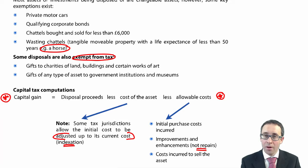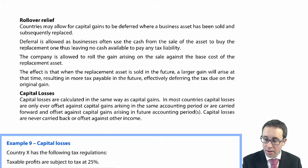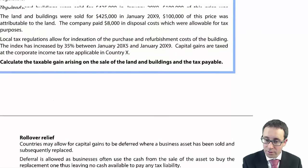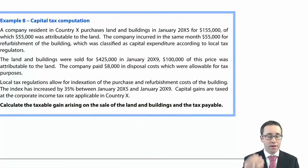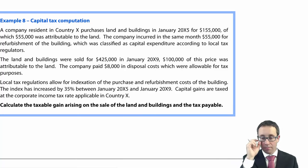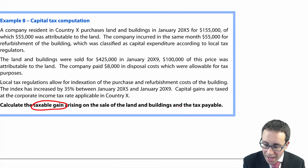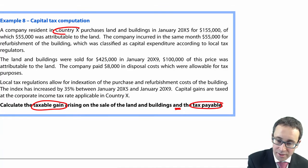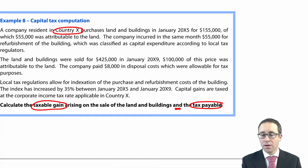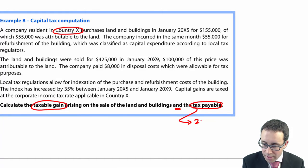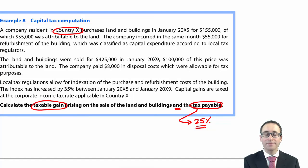You just need to learn those and apply them within the question. Looking at the question at the bottom of the page — your capital tax computation. The question asks you to calculate the taxable gain using that formula, and the tax payable. It talks about being resident in country X, and the tax payable is based on a rate of 25% of the taxable gain.